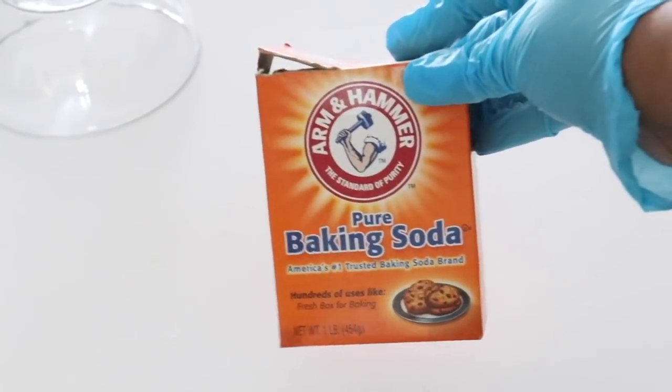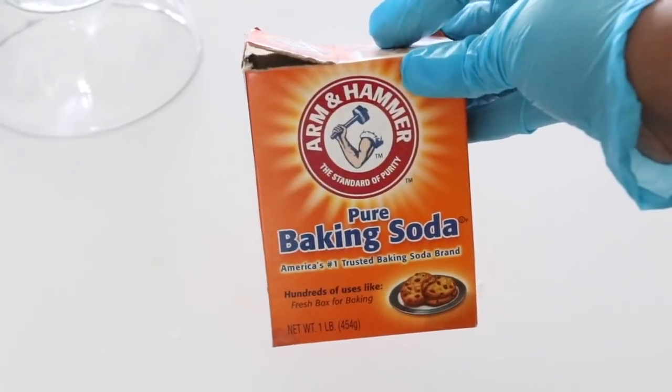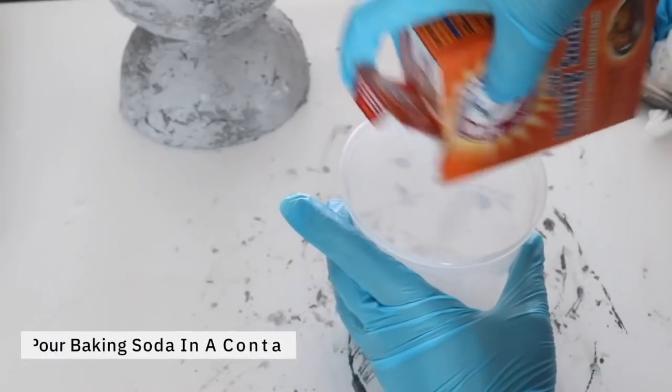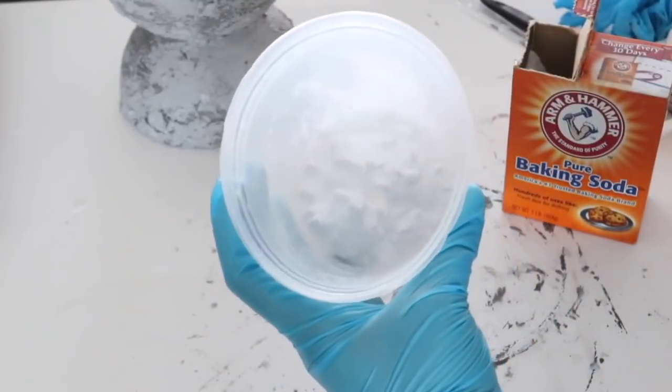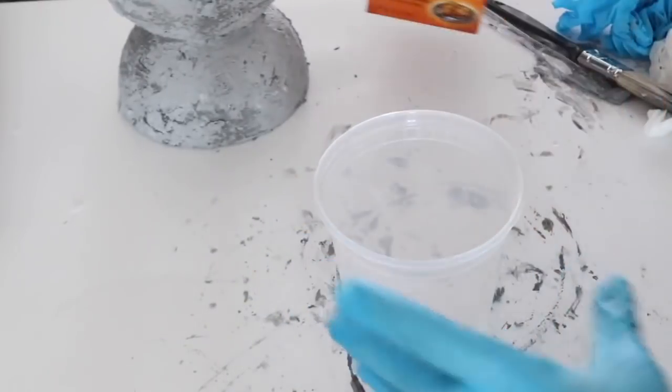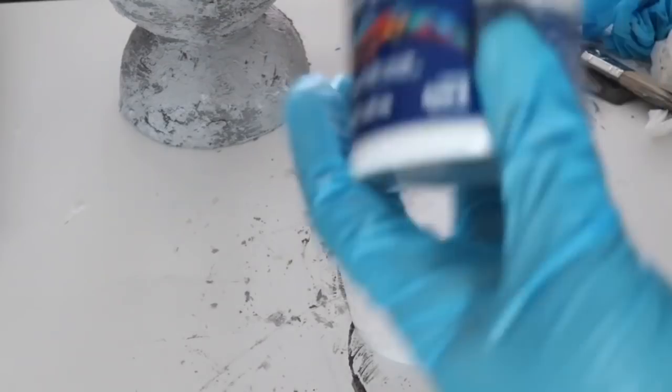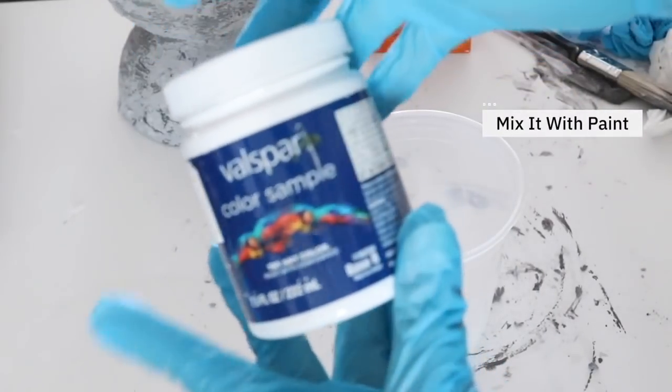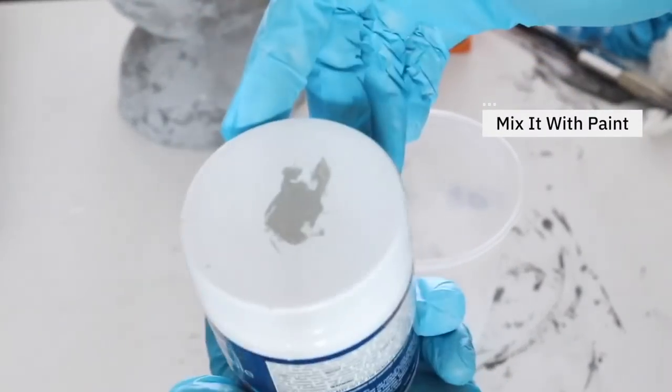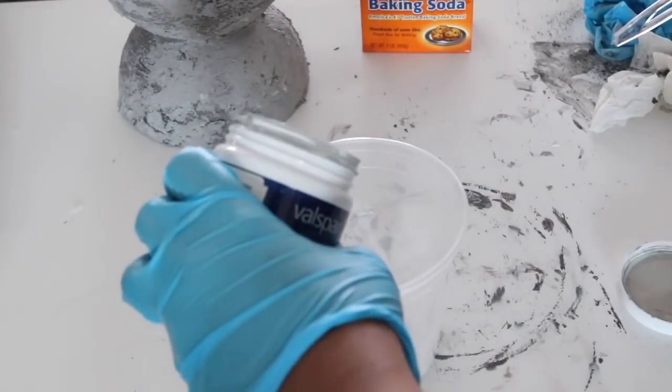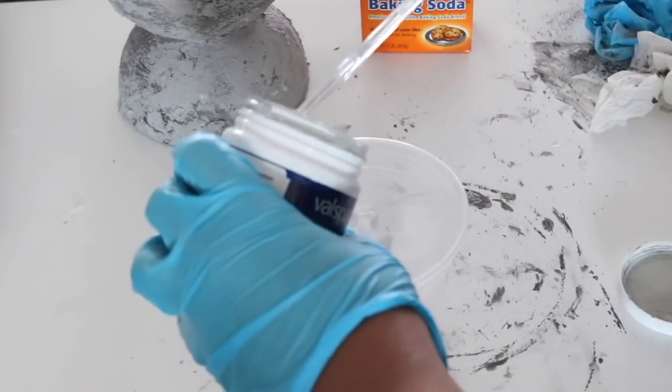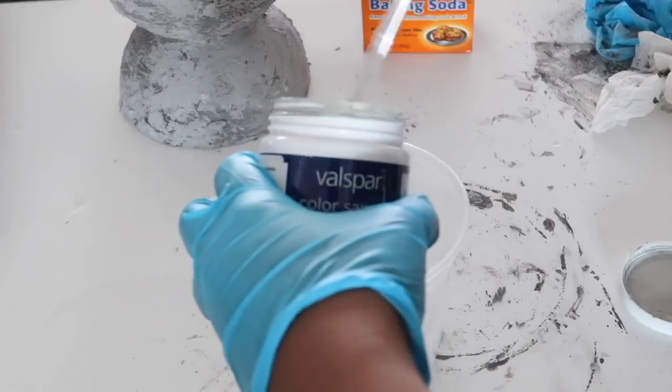After the glue has cured, what I want you to do is take pure baking soda and you just want to put a little bit into a container. You want to make sure the container is not something that you're going to use again. Next, you want to add in your paint. What I'm going to do is just take some sample wall paint that I had and I'm just going to add a little bit and just make sure the consistency is still thick. You don't want it to be thin at all.